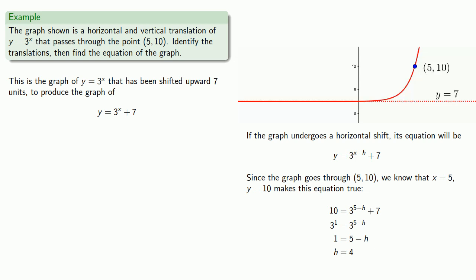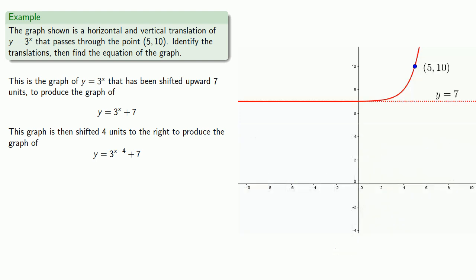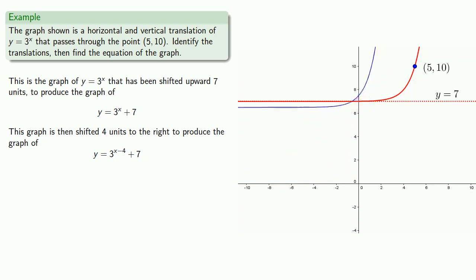So the graph is shifted 4 units to the right, producing the equation y equals 3 to the power x minus 4, plus 7. We take the graph of y equals 3 to the x, shift it upward by 7 units, then shift it right by 4 units.